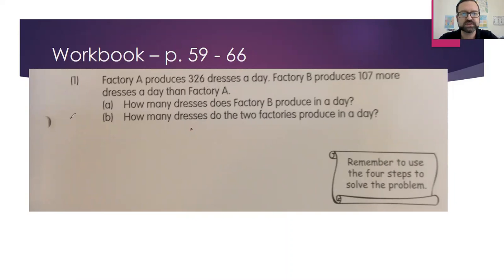So what are our four steps? Step number one should be getting all this information. So it appears we have two factories, Factory A and Factory B. I'm just gonna call them A and B. And we know that Factory A makes 326.